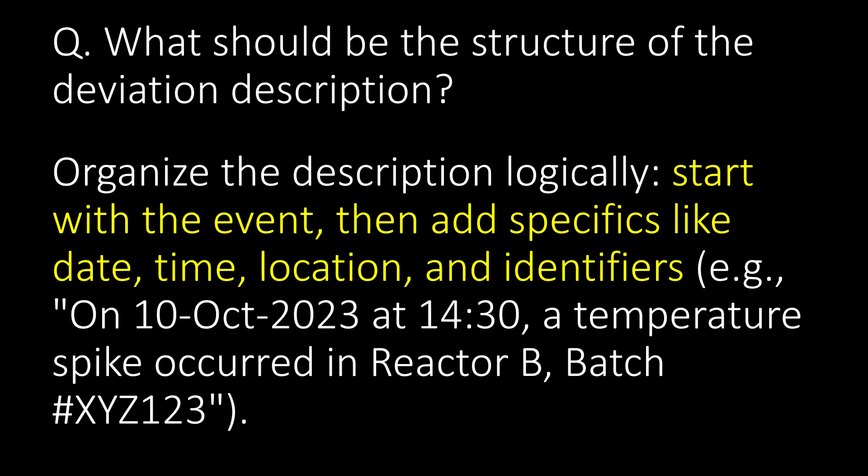What should be the structure of the deviation description? Organize the description logically. Start with the event, then add specifics like date, time, location, and identifiers. For example: on 10th October 2023 at 14:30, a temperature spike occurred in reactor B, batch number...